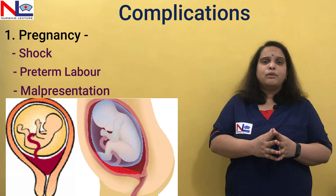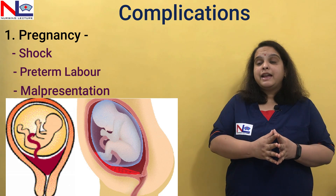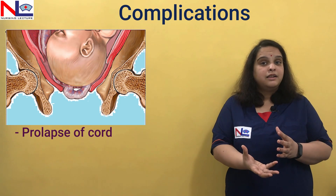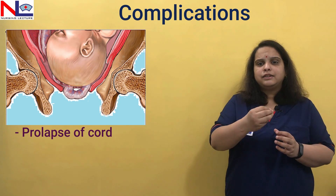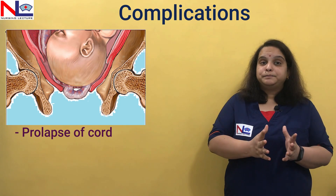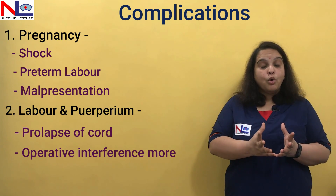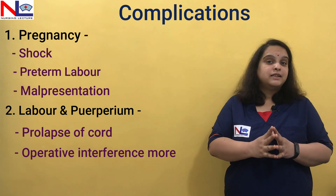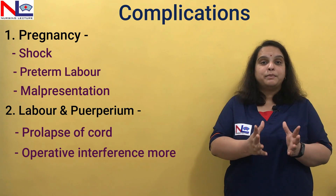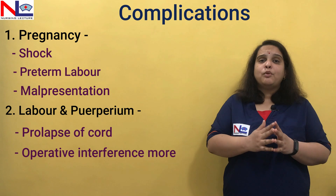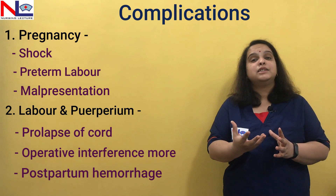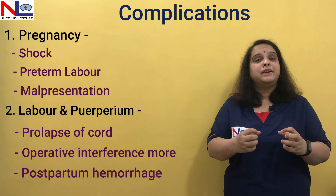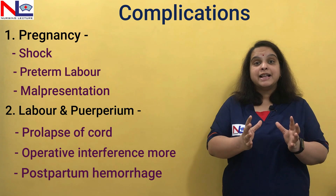Once the woman is in labor, there is a higher chance of cord prolapse because the cord is lying in the lower segment and may come first. Operative interference is more common because practically all cases of placenta previa need caesarean section. Along with that, postpartum hemorrhage can occur because the placenta is low-lying and the retractive ability of smooth muscle fibers is not as good as in the fundal part.